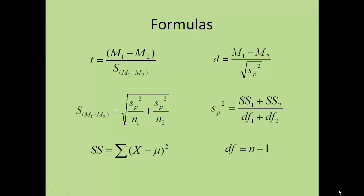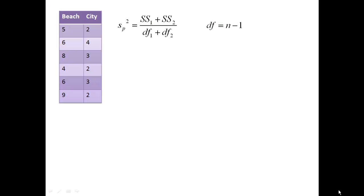Let's go look at the formulas. You can see, now that we have the sum of squares, we can calculate the pooled variance. Here are the formulas for pooled variance. We need to know the sum of squares, and we need to know the degrees of freedom.